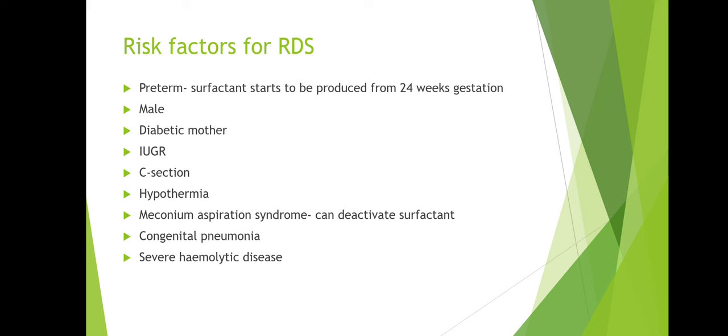Male infants are also more at risk of RDS. Babies born from a diabetic mother — whether gestational diabetes or pre-existing — are also at risk. The mechanism is: the mother is hyperglycemic, the baby becomes hyperglycemic in utero and produces lots of insulin. Insulin inhibits the production of surfactant. So when the baby is born, even at term, they won't have adequate surfactant and may have respiratory distress and require support.